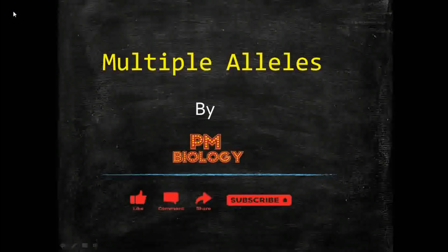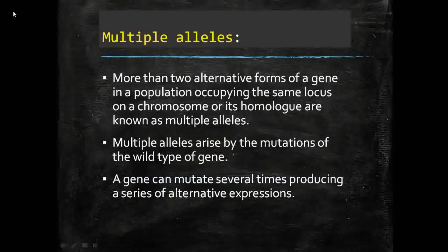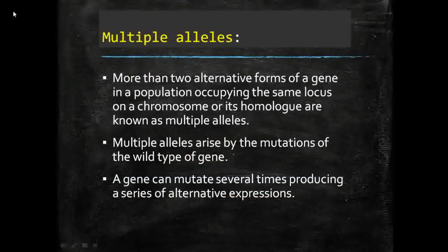We will also see one example — the ABO blood group system in human beings. Now, multiple alleles are defined as: more than two alternative forms of a gene in a population, occupying the same locus on a chromosome or its homologue, are known as multiple alleles.